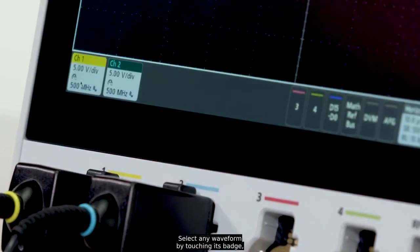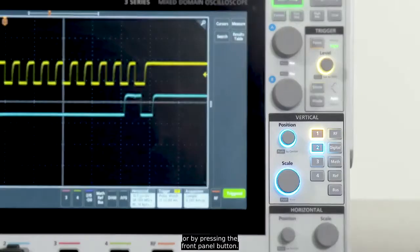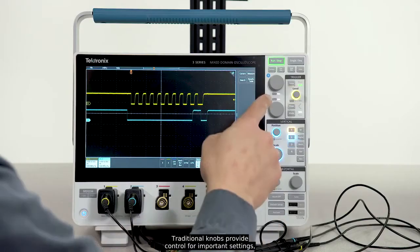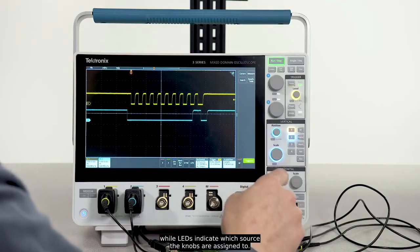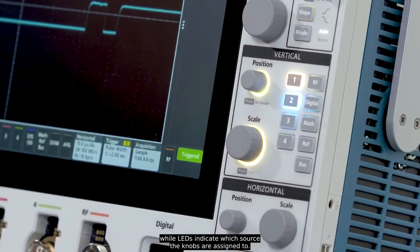Select any waveform by touching its badge or by pressing the front panel button. Traditional knobs provide control for important settings while LEDs indicate which source the knobs are assigned to.